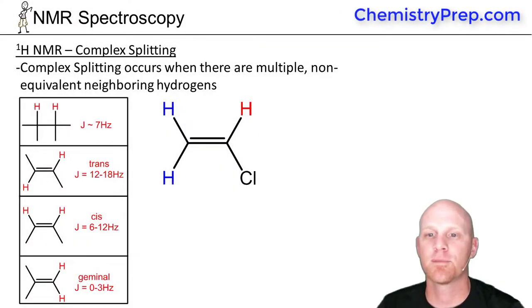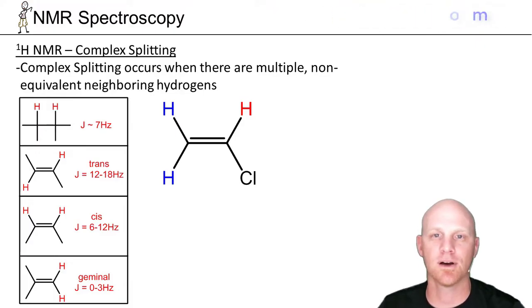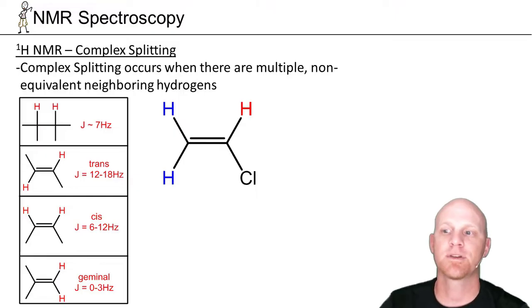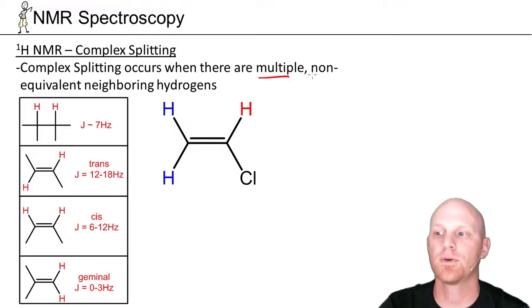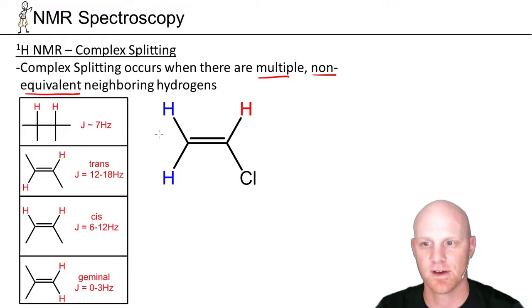Now I want to take a little time to talk about what's referred to as complex splitting. This is a concept that a lot of students don't get a great handle on in their undergraduate course. Complex splitting occurs when there are multiple non-equivalent neighboring hydrogens.